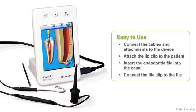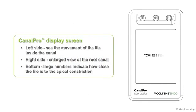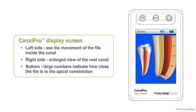To use the CanalPro Apex Locator, simply connect the cables and attachments to the device, attach the lip clip to the patient, insert the endodontic file into the canal, and connect the file clip to the file. An image of the file inside the tooth will appear on the high-resolution 3D full-color display screen. At this point, you'll be able to see the movement of the file inside the canal on the left side of the display and an enlarged root canal image on the right.